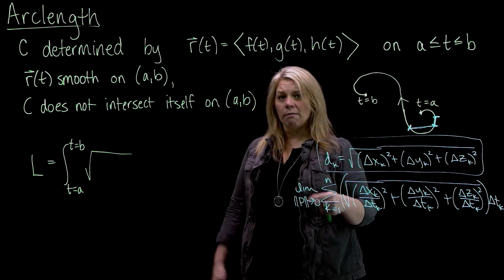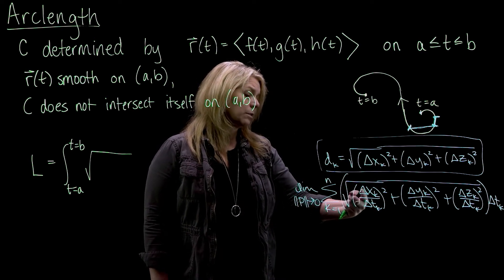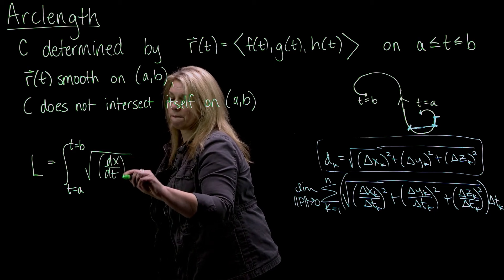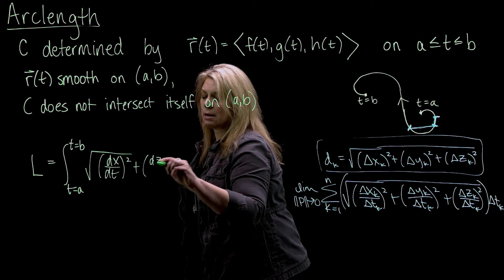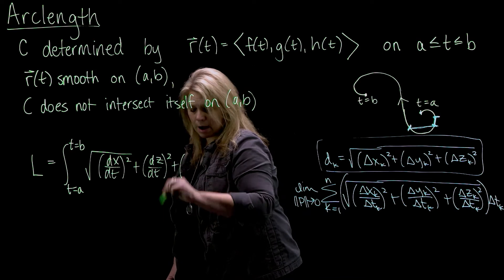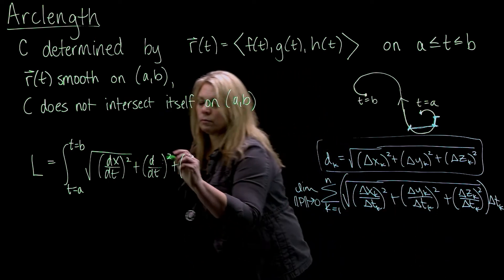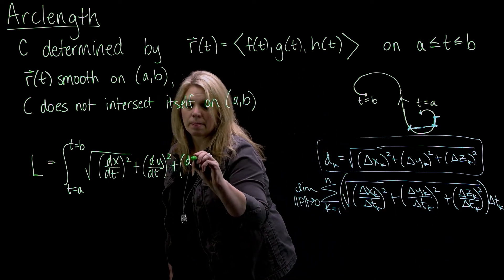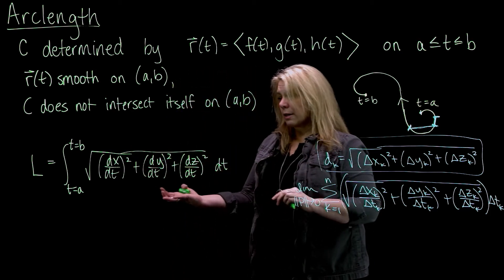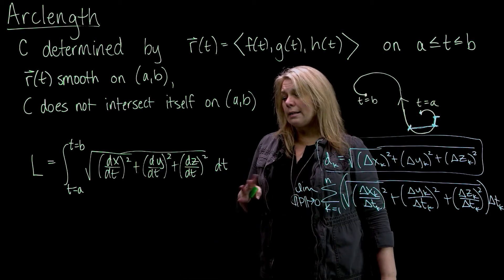There are different ways that you might think about writing this. I tend to think about it in terms of distance formula. So I tend to write it using dx dt and dy dt and dz dt. So this integral gives the length of that curve, arc length or length of that curve. So I tend to think about it this way, where our x, y, and z come from these component functions from our vector-valued function.